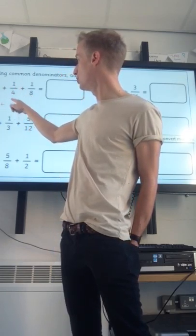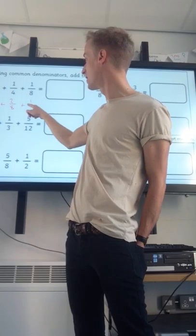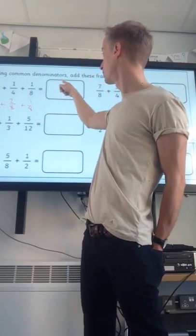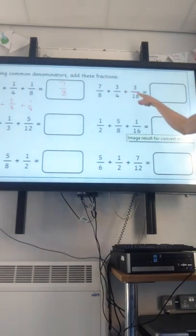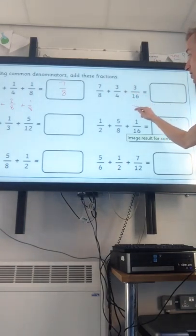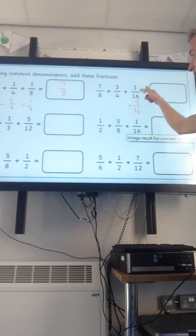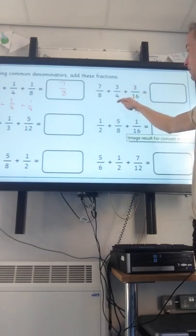Common denominators. So sensible common denominator working with halves, quarters and eighths is going to be eighths. So we're going to times it by 4 to turn it into eighths. So we've got 4 eighths. Times quarters by 2 to turn it into eighths. Add 2 eighths. Add 1 eighth to get a total of 7 eighths.